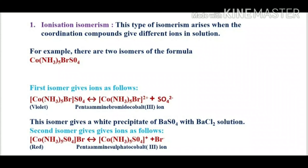The first isomer gives a white precipitate of barium sulfate with barium chloride solution. The second isomer has the formula pentamine sulphato cobalt(3+) bromide. Both share the same molecular formula, but the difference is in the ligand: the first has a bromo ligand inside the bracket, while the second has a sulfate ligand inside the bracket. The second isomer gives the complex species and bromide ions, and produces a light yellow precipitate with silver nitrate solution.